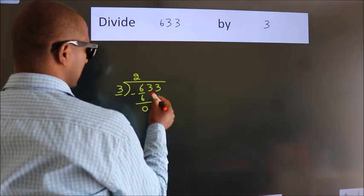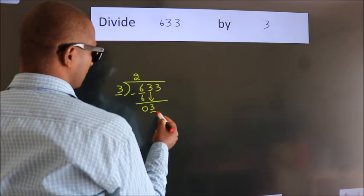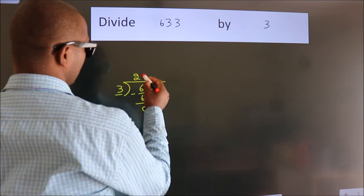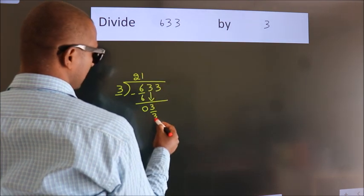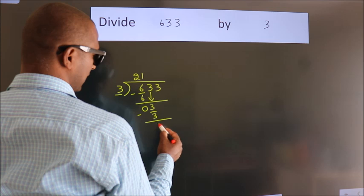After this, bring down the beside number. So 3 down. When do we get 3? In 3 table. 3 times 1 is 3. Now we subtract. We get 0.